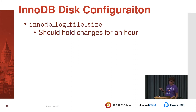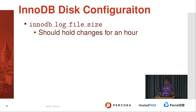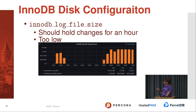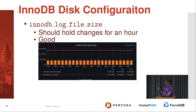InnoDB disk configuration: InnoDB log files — when you write data to InnoDB, it goes to the buffer pool and doesn't immediately go to disk. But if MySQL crashes, data in memory is lost. To prevent this, InnoDB uses log files and writes sequential data to them; in the background it flushes to disk. If the log files are too small, InnoDB stops all operations and flushes aggressively. The rule of thumb is that log files should hold changes for one hour. The screenshot from PMM shows log file size versus data written per hour — that's a healthy situation.